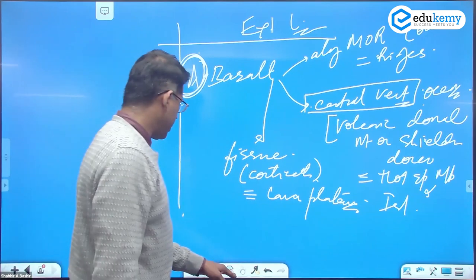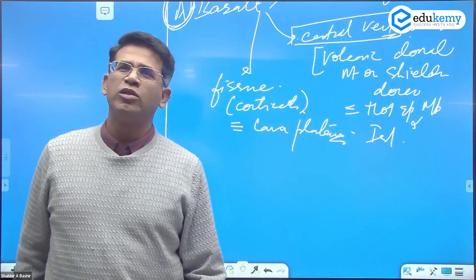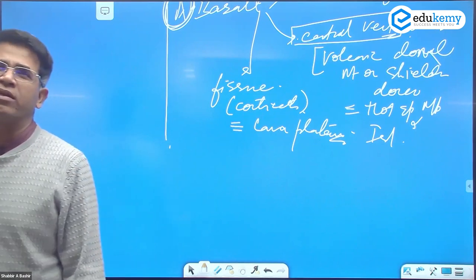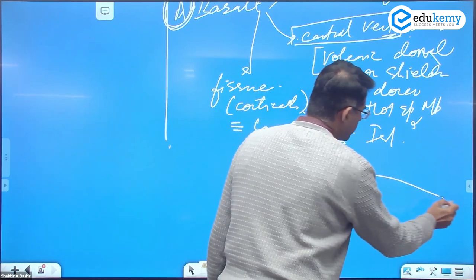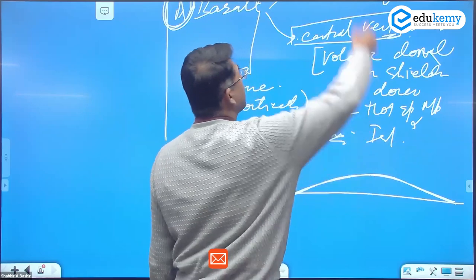This type of extrusive domal, shield, volcanic domal mountains. Domal, D-O-M-A-L, domal shield mountains, domal volcanic mountains because they look like a dome. It's not steep, it's a very gentle sloping, and in time they can pile up and become very, very high like Mauna Kea, Mauna Loa.